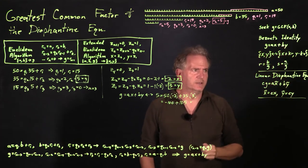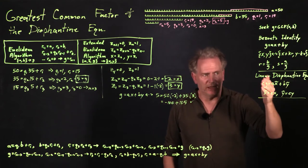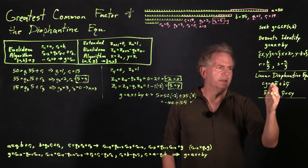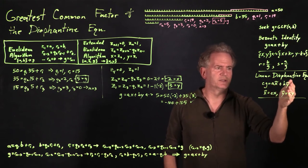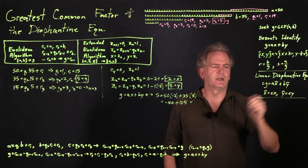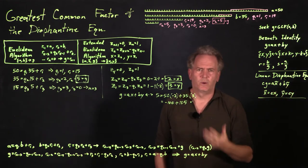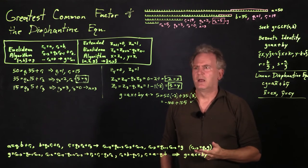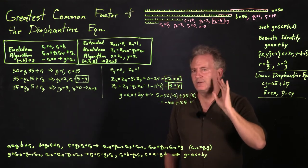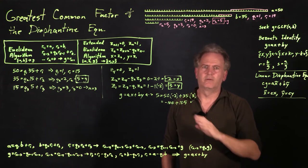So that's how we use Euclid's algorithm to calculate the greatest common factor G, and the extended Euclidean algorithm to calculate X and Y solving Bezout's identity, and from there solve the linear Diophantine equation. Next, we'll repeat this process exactly the same way but doing division over the polynomials instead of integer division.